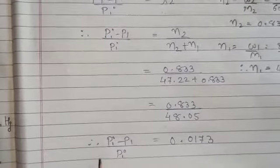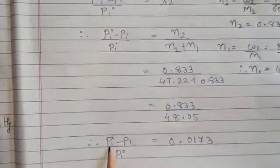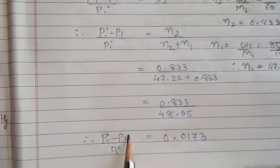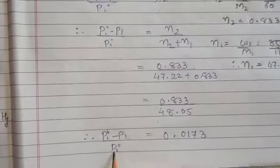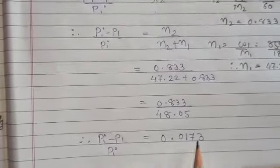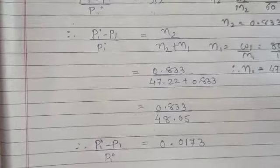After substituting and simplifying the values of N1 and N2, we get the relative lowering: (P1° − P1) / P1° = 0.0173.